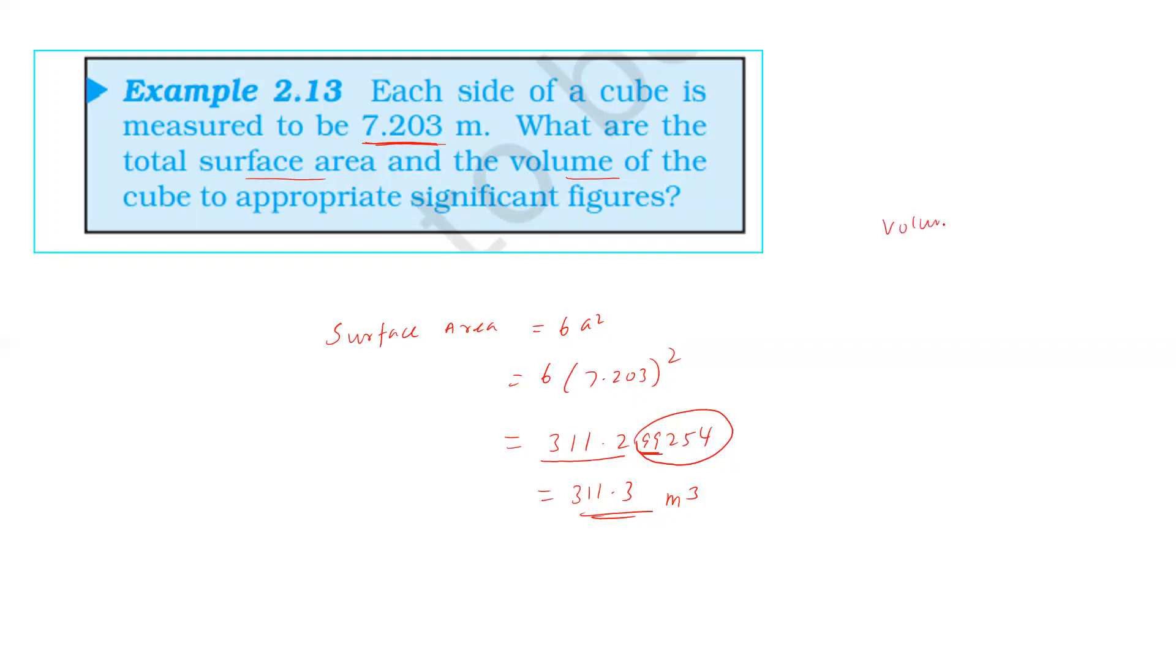The volume is side cubed. 7.203 cubed equals 373.714754 meter cubed. That is 4 significant figures. If it is greater than 5, then we will round up. If the dropped number is less than 5, then the preceding number does not change. It is 373.7 meter cubed.